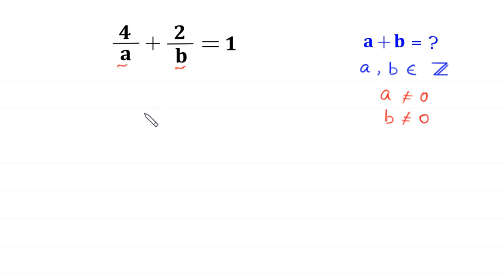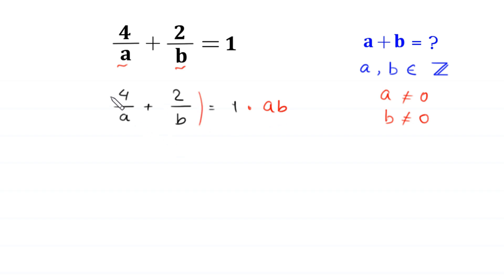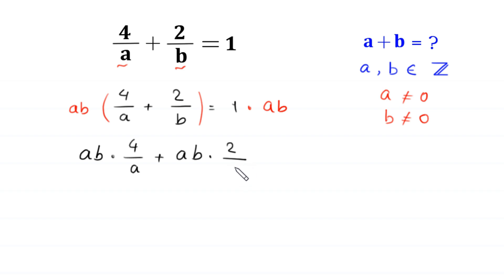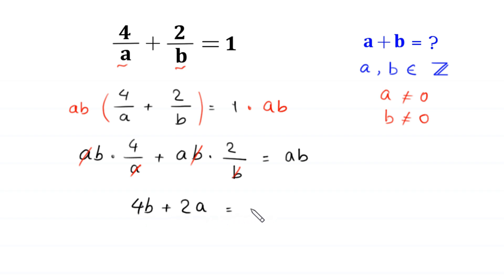Now let us move on by multiplying both sides by the LCM of a and b, which is ab. The original equation is 4 over a plus 2 over b is equal to 1, and we multiply both sides by ab. This a cancels with this a and this b cancels with this b, so the equation becomes 4b plus 2a is equal to ab.